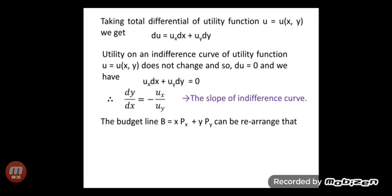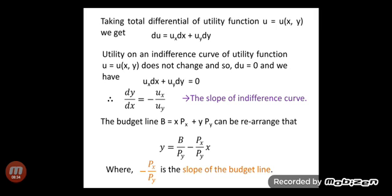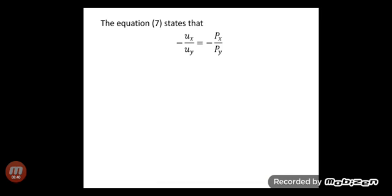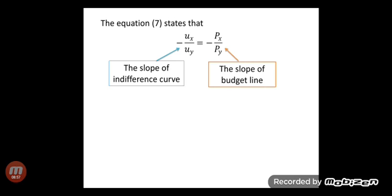The budget line b = x·px + y·py can be rearranged as y = b/py − (px/py)·x, where −px/py is the slope of the budget line. Equation 7 states that −ux/uy = −px/py, where −ux/uy is the slope of the indifference curve and −px/py is the slope of the budget line, and both are equal.